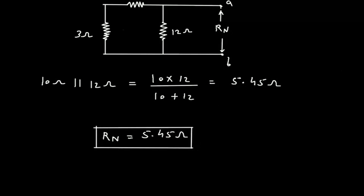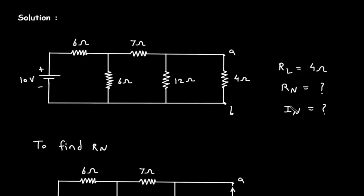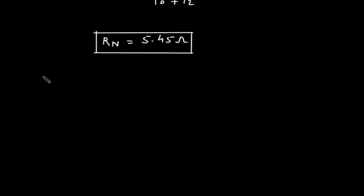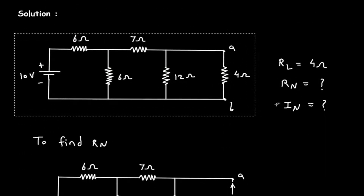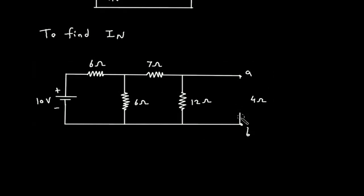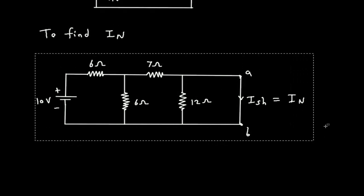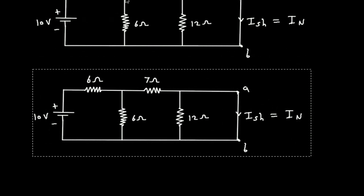Now we have the value for RL and Rn. Next we have to find In, that is Norton's current. To find In, we have to short circuit terminal A and B. So we remove this RL and short circuit terminal A and B. This current will be Ish, the short circuit current, which is equal to In, Norton's current. When we short circuit terminal A and B, this 12 ohm will become 0, so we can redraw the circuit and remove this 12 ohm.